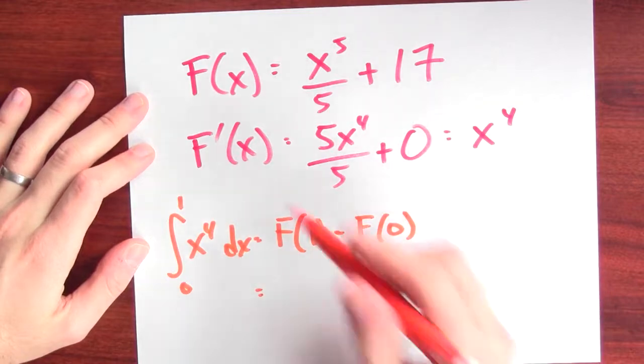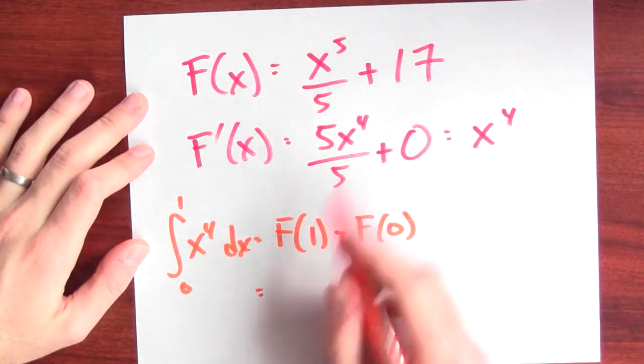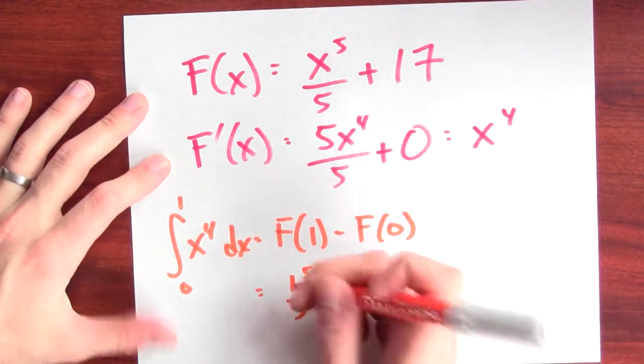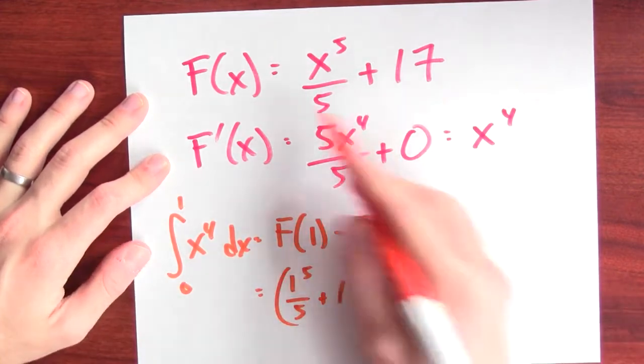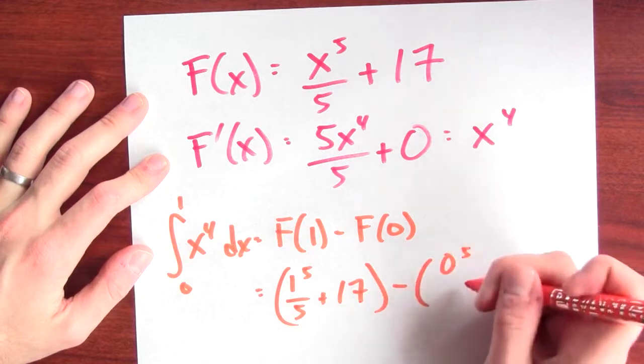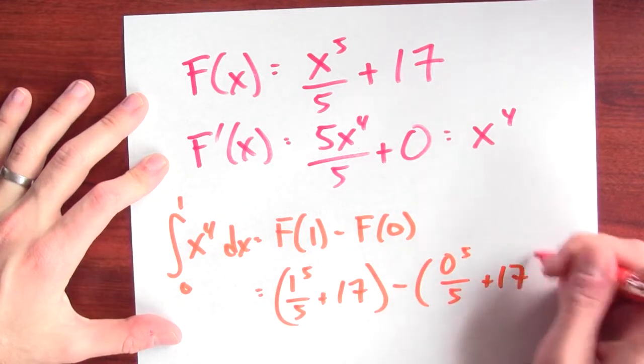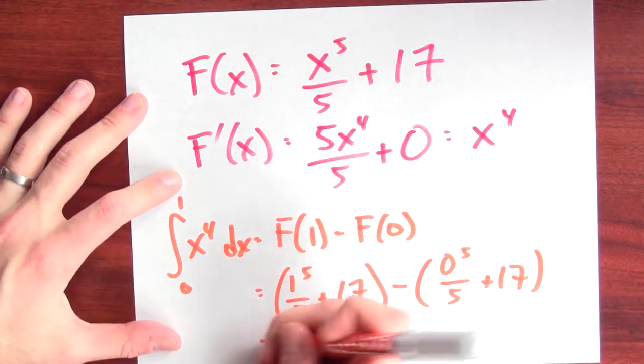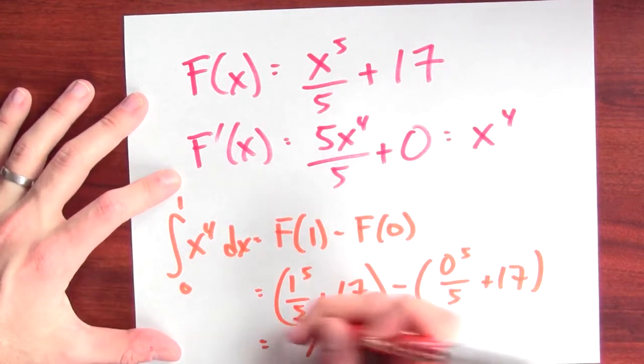In this case, my chosen antiderivative is this function, so I plug in 1, and I get 1 to the 5th over 5 plus 17 minus what I get when I plug in 0, which is 0 to the 5th over 5 plus 17, and 1 5th plus 17 minus 17. Well, this is just 1 5th.